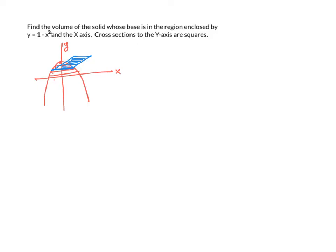I suggest you pause the video and try it on your own, then compare your answer with mine at the end. Cross-sections are perpendicular to the y-axis squares, meaning each base lies perpendicular to the y-axis. We are adding from 0 to the vertex of the parabola, which is at (0, 1). So we're adding along the y-axis from 0 to 1, meaning the thickness is delta y and the area is in terms of y.